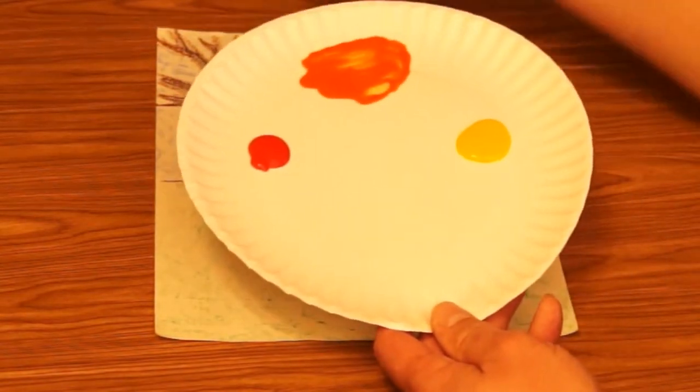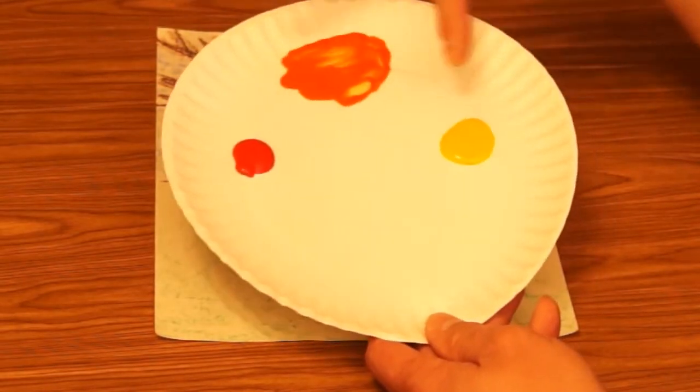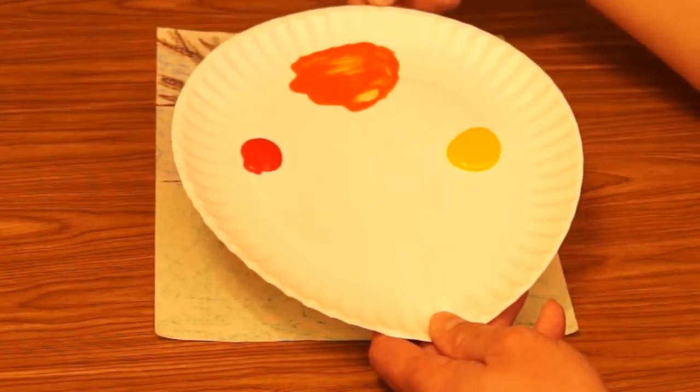Now this is tempera paint and you can either buy the orange pre-made or you can do what I did and mix the red and yellow together and make your own orange.